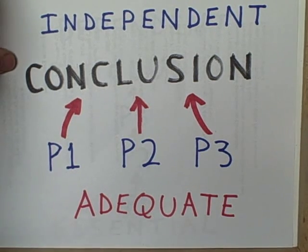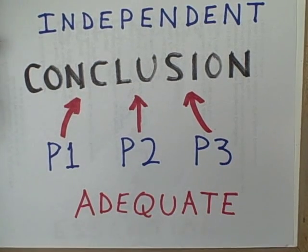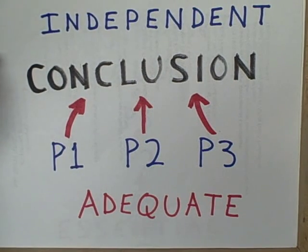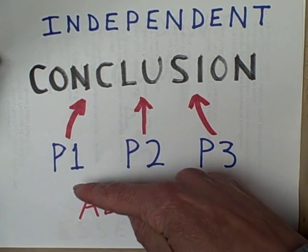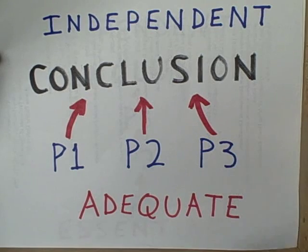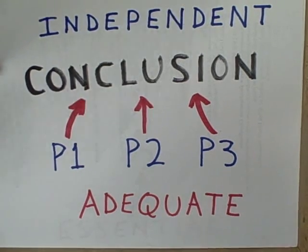That makes it very hard to refute an argument supported with independent premises because someone would have to refute each and every one of these adequate premises.